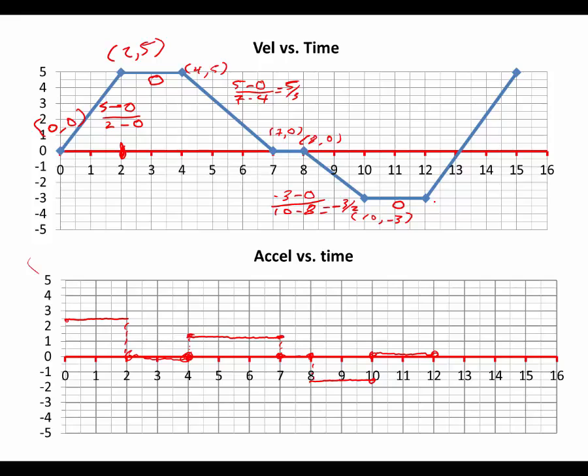And then we go from 12, negative 3 to 15, 5. So 5 minus a negative 3 over 15 minus 12. So we get 8 over 3, or 8 thirds, positive 8 thirds, 8 thirds being 2 and 2 thirds.